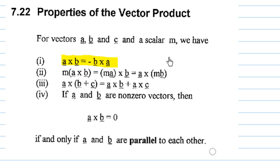And if m is any scalar, m times a cross b equals (m times a) cross b or a cross (m times b). And this is also distributive: a cross (b plus c) is the same as a cross b plus a cross c.